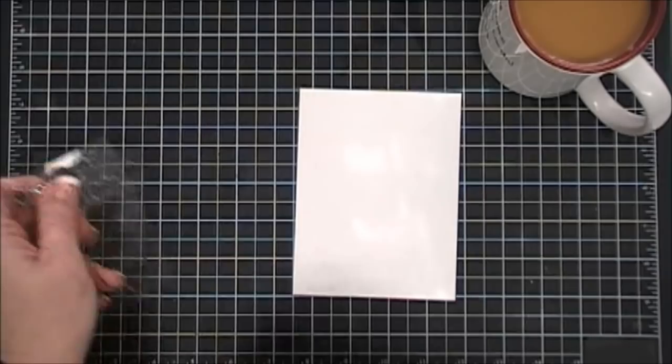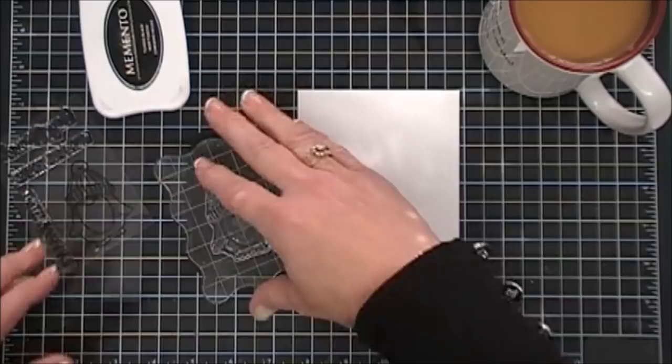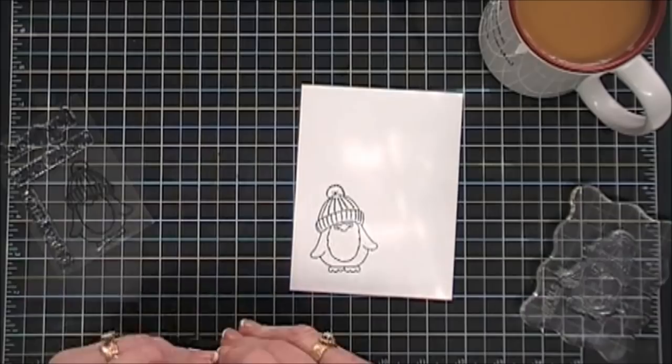We're going to start off by doing some stamping. I usually stamp on Neenah 80 pound cardstock. So we'll take our little penguin whose little hat is covering his eyes. I'm going to ink him up with some Memento Tuxedo Black ink. Both the cardstock and the ink are both Copic friendly. They're my go-to when I do coloring.